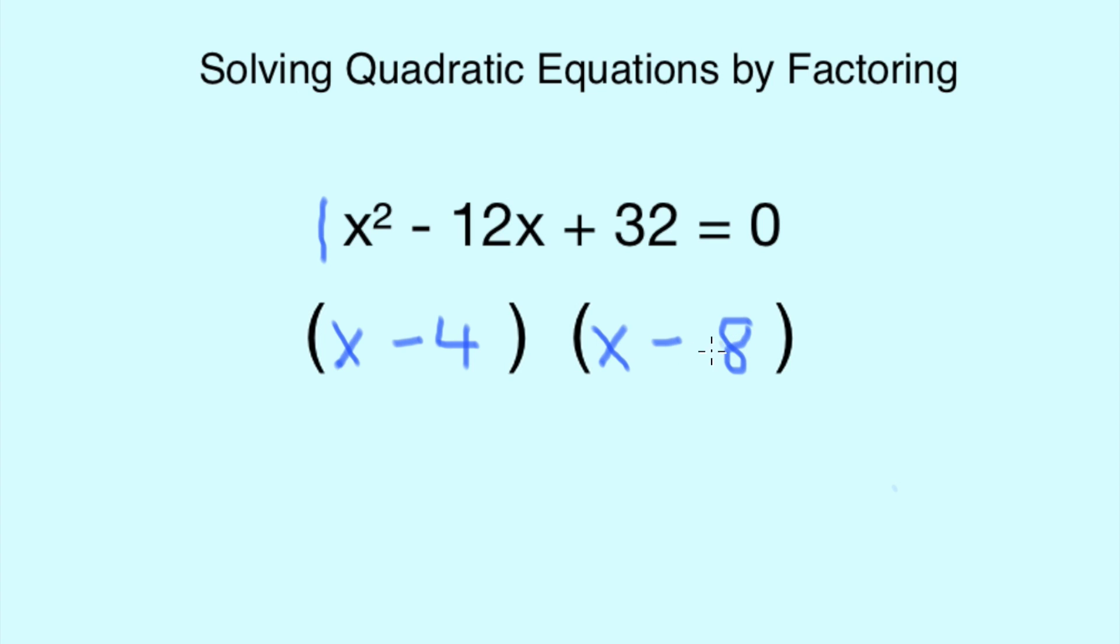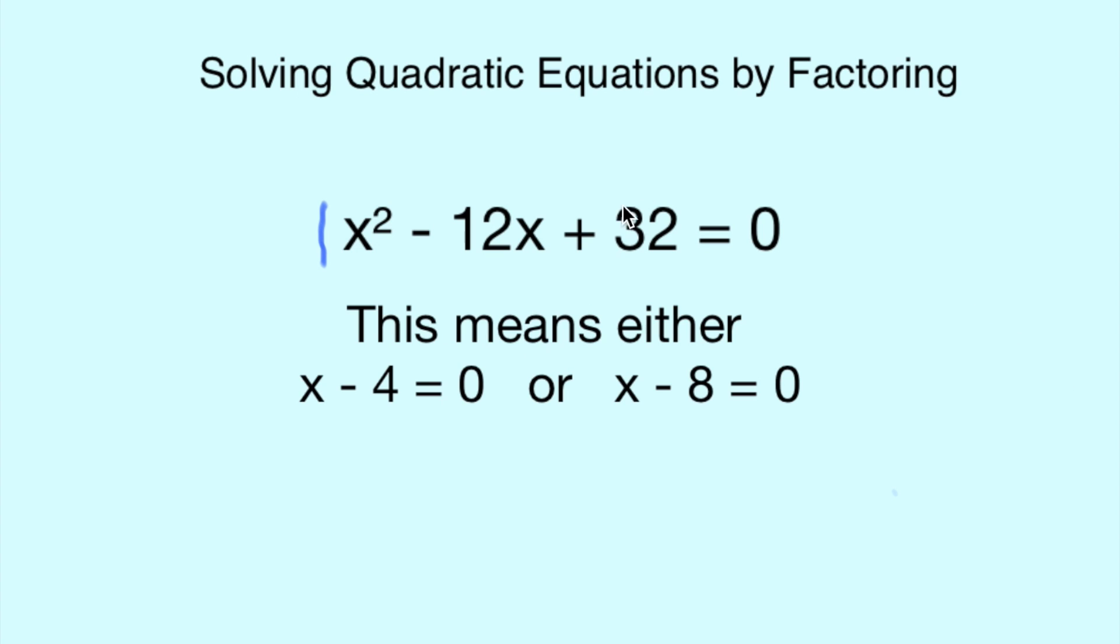We put that within each of our brackets, so now we have (x - 4)(x - 8) = 0. We now need to find the value of x. This means that either x - 4 = 0 or x - 8 = 0.